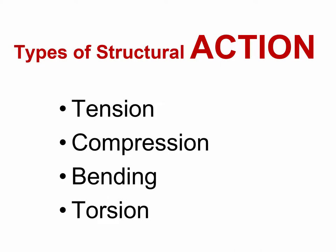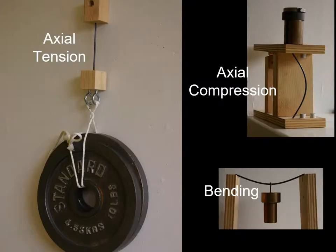Axial tension and axial compression involve members or forces parallel to the long direction of the member. Bending involves forces perpendicular to the long direction of the member. And finally, torsion involves anything that tends to twist the member. Here we have demonstrations of axial tension, axial compression, and bending — the first three types of structural action we were talking about.